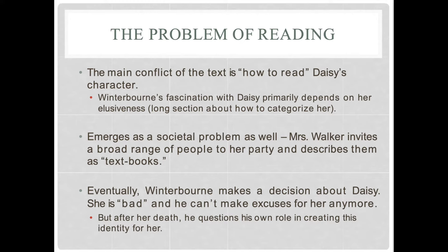Eventually, in the scene at the very end where Daisy is out late at night with Mr. Giovinelli, Winterbourne makes a decision about her: now he knows exactly who she was, because any respectable woman would not be out after dark alone with a man. To give an idea of how scandalous this would be — even though nothing was caught happening — in today's terms it would be the equivalent of walking in on someone having an affair. Her reputation is basically ruined, and he decides she is bad and he can't make excuses for her anymore.